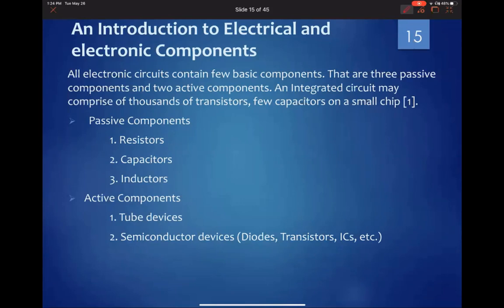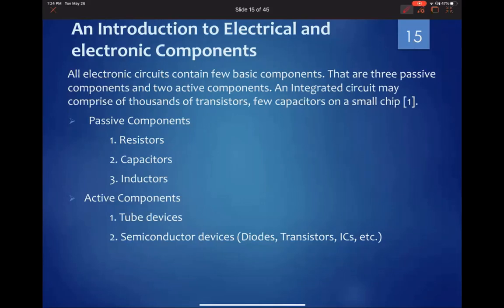Active components include tube devices and semiconductor devices such as diodes, transistors, and ICs. For a transistor to work, it needs to be powered up — you need to supply a voltage, also referred to as Vcc in schematics. Similarly, a light-emitting diode needs to be powered up; a red LED, for example, requires 1.8 volts. Let's now move on to resistors.